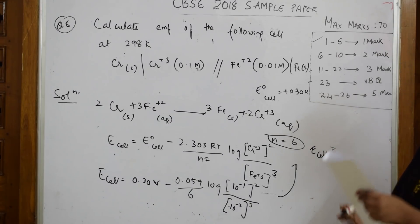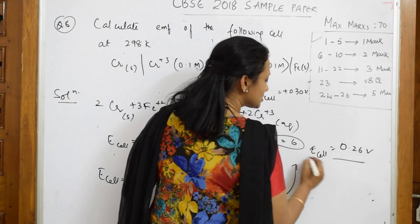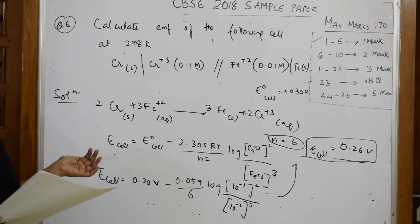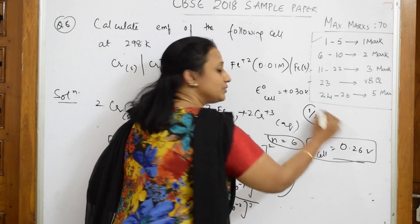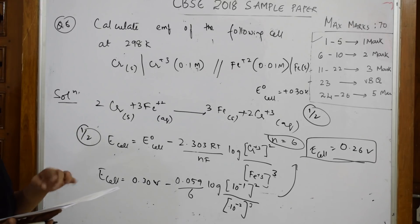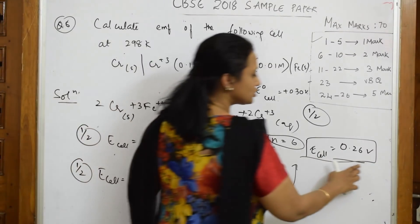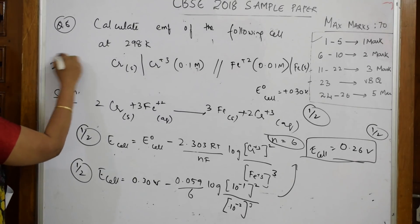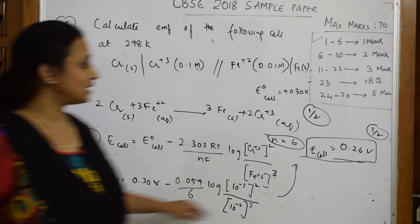Solving the full expression, the E_cell value comes out to 0.26 volts — that is your answer. Now for mark distribution: writing the cell reaction earns half a mark, writing the Nernst formula earns half a mark, substitution earns half a mark, and the final answer earns half a mark. Total: 2 marks.